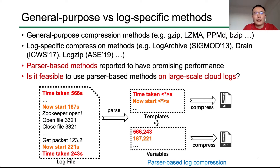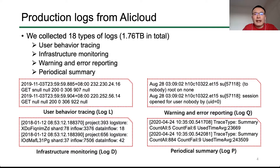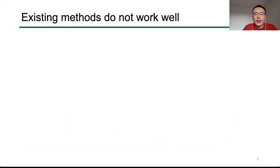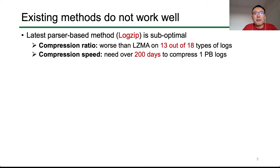But is it feasible to use them on large-scale production logs? We try to answer this question in this work. To carry out this study, we collected 18 types of production logs in AliCloud, with a total size of 1.76 terabytes. We tested the latest parser-based method LogZip on production logs and found it does not work as expected. Its compression ratio is worse than the general-purpose method LZMA on 13 out of 18 types of logs. In terms of compression speed, it takes over 200 days to compress one petabyte of logs with one server, meaning we need at least 200 servers. But why?